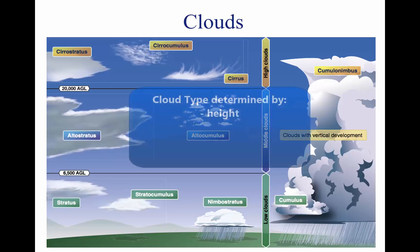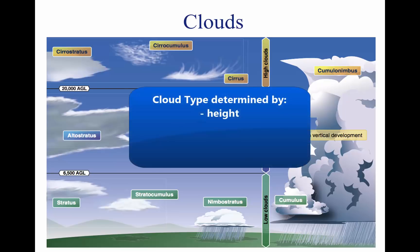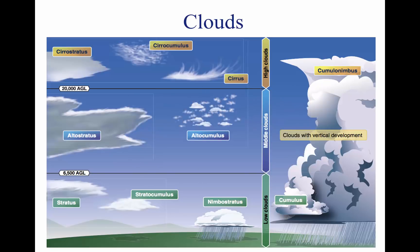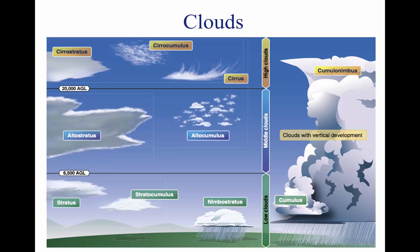Cloud type is determined by its height, shape, and behavior. Clouds are classified according to the height of their bases as low, middle, or high clouds, as well as clouds with vertical development.